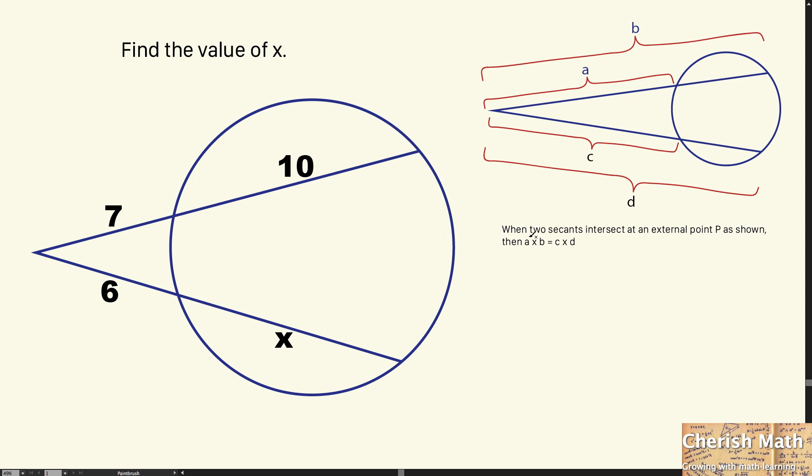Let me read it. When two secants intersect at an external point P as shown, then A times B equals C times D.